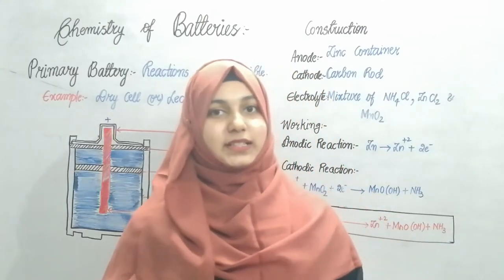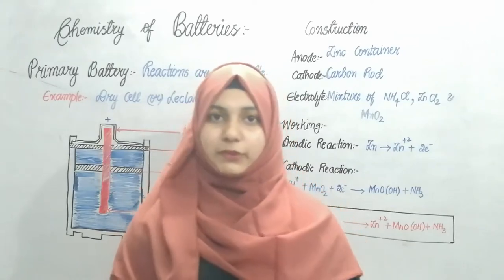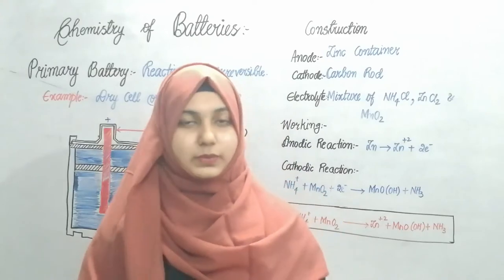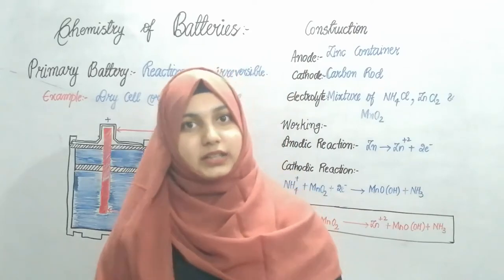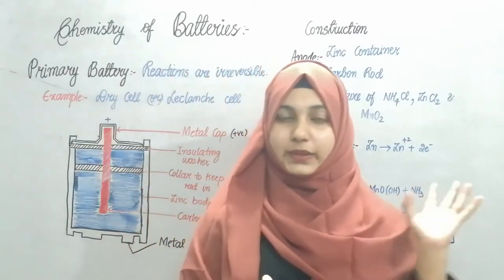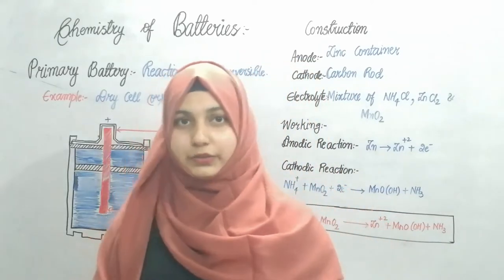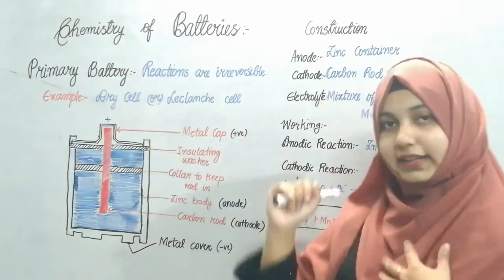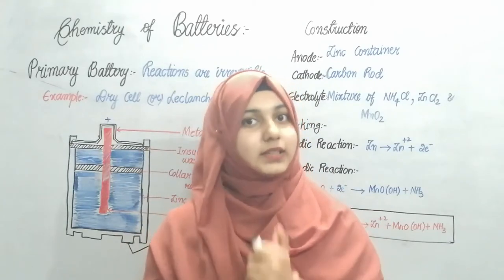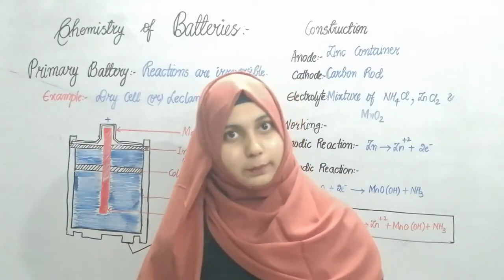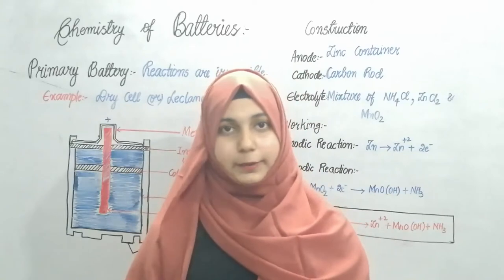Assalamualaikum everyone. In this video we'll see the construction and working of a carbon battery. Before that, a quick revision of what primary cells and primary batteries are. A primary battery is a cell in which chemical reactions cannot be reversed by passing an external current. Such batteries are called primary batteries. A dry cell, or Leclanché cell, is a cell that does not contain a fluid electrolyte.